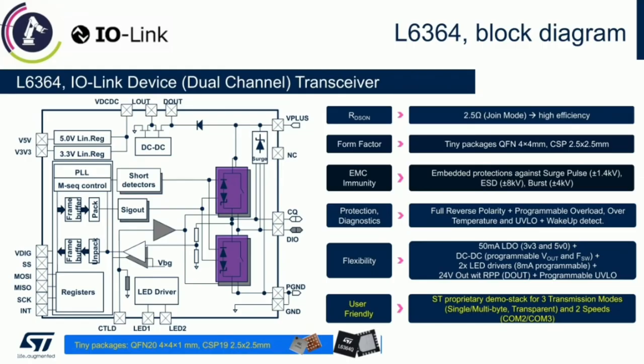The L6364 has just been released. It comes with an embedded LDO and DC-DC to simplify the design, along with all the protections for EMC immunity, reverse polarity, over-temperature, and overload, in a tiny QFN20 package measuring 4 mm x 4 mm x 1 mm.